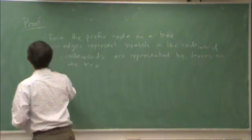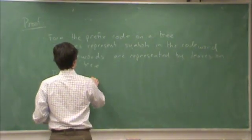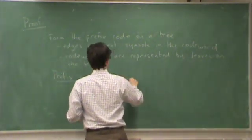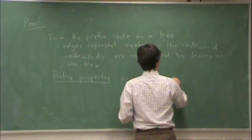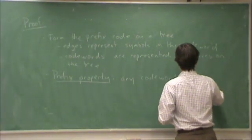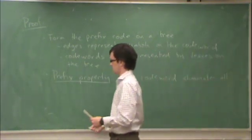So, the prefix property, any codeword, eliminates all of its descendants from the tree. This is what I said a second ago.